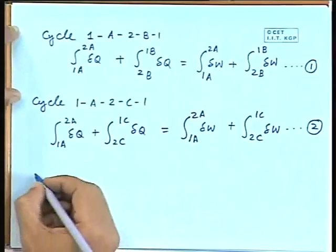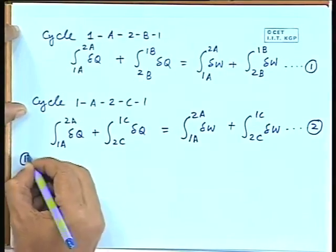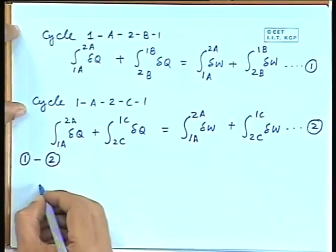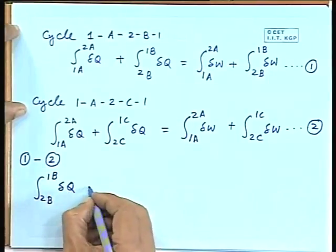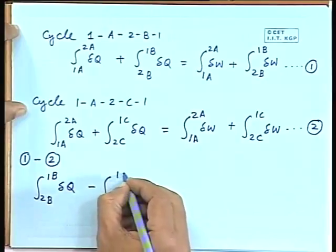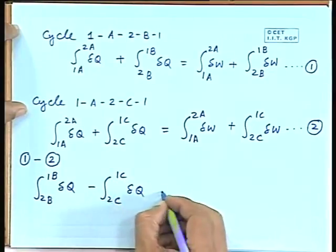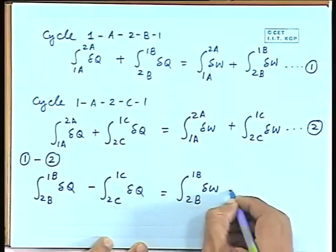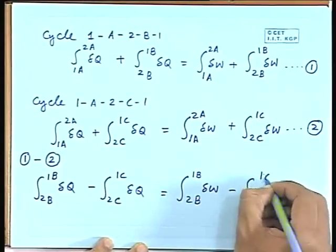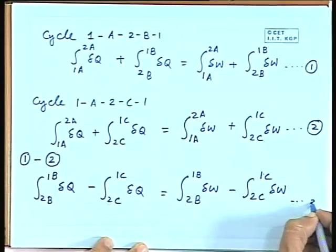Now, if we subtract Equation 2 from Equation 1, we get: integral from 2B to 1B of dW minus integral from 2C to 1C of dW, along with corresponding heat terms. Let us call this Equation 3.